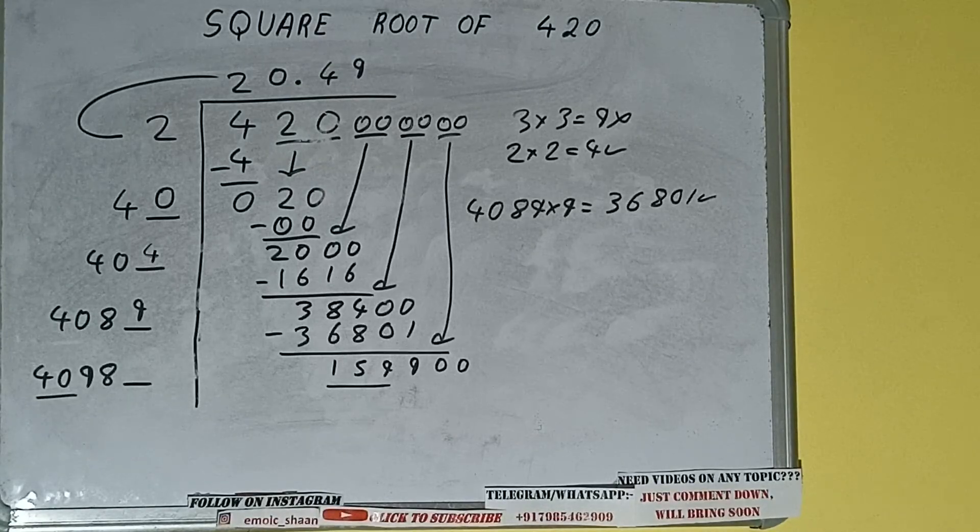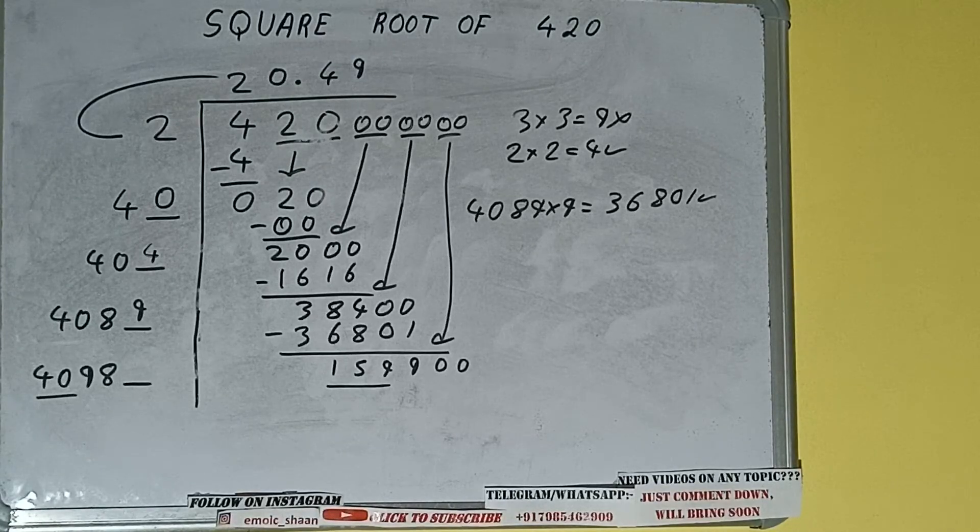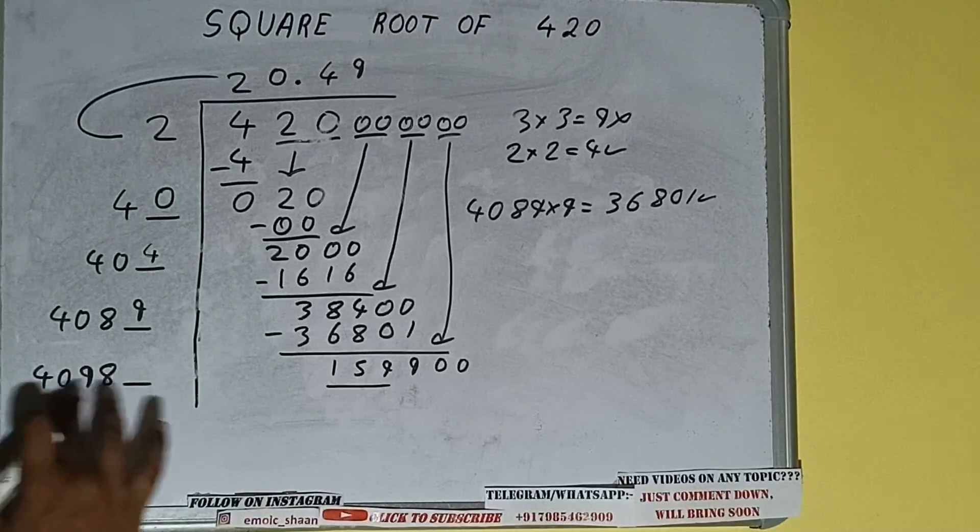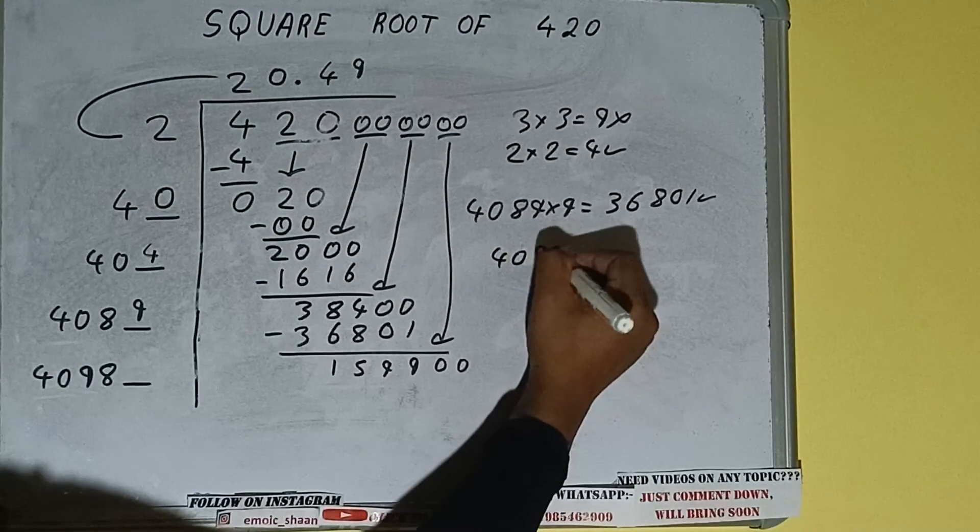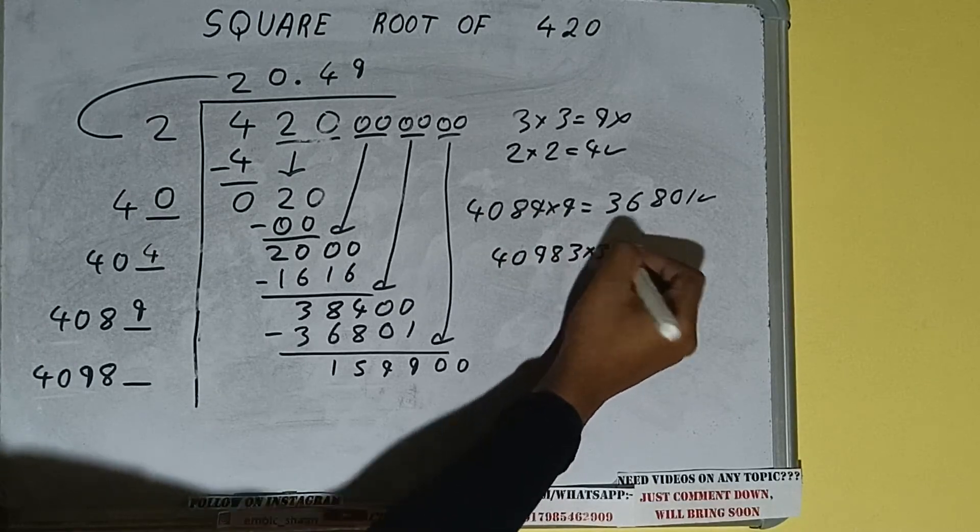So 40 times 4 is 160, so we cannot try 4 times. We have to try 3 times. So 4098 times 3, into 3 we can try.